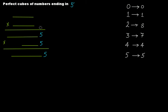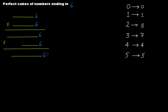If your number ends in 6: 6 times 6 is 36 — 3 carried over, 6 at units place. Multiplying by 6 again: 6 times 6 is 36 again — so 6 at the units place. It means that if your number ends in 6, its perfect cube will also have 6 at the units place.